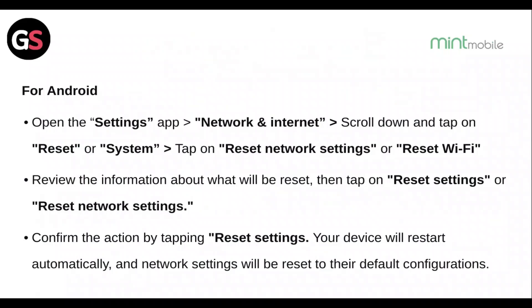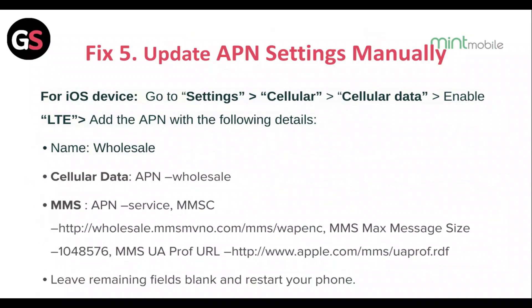Fix 5: For iOS, go to Settings, then Cellular, then Cellular Data. Enable LTE and add the APN with the required details. Leave the remaining fields blank and restart your phone.